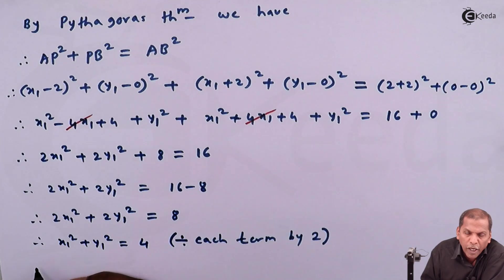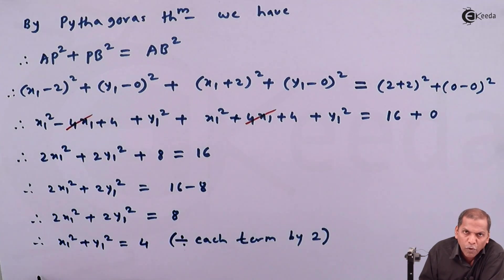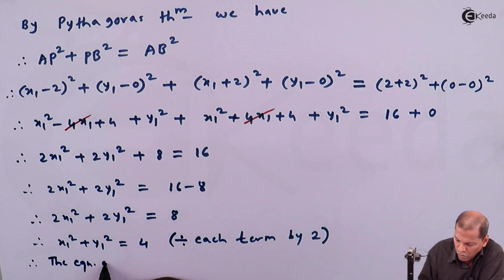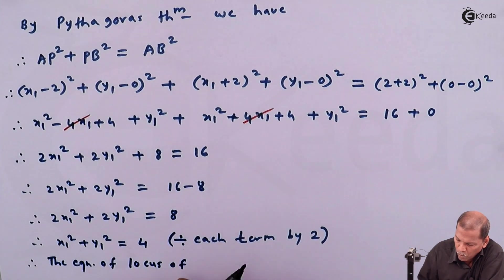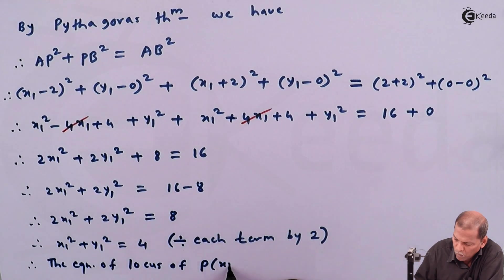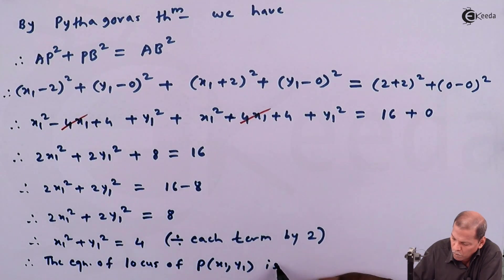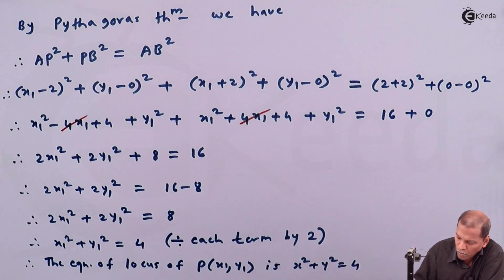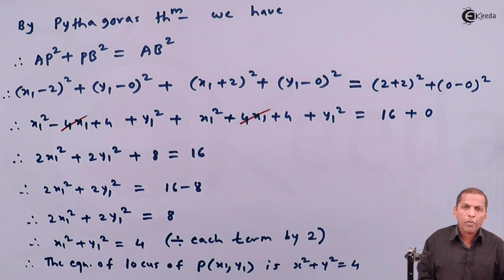And finally, the equation of locus of P at (x1, y1) is x² + y² = 4. So this is the required solution for the given problem. Thank you.